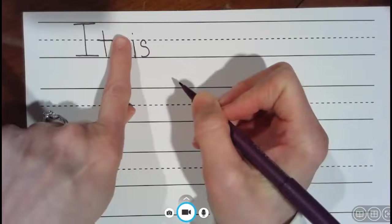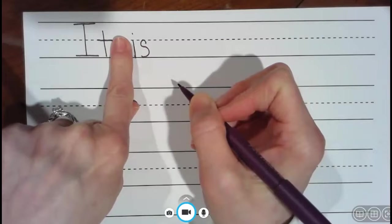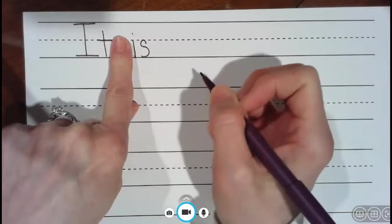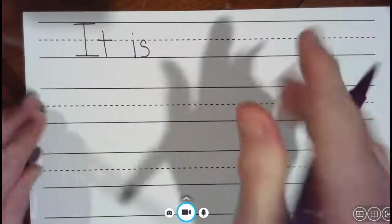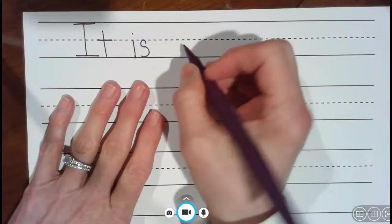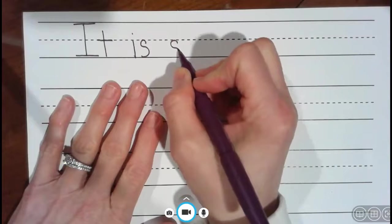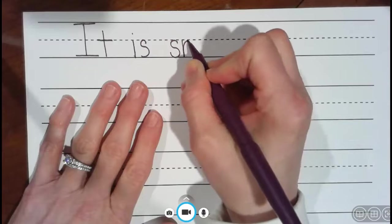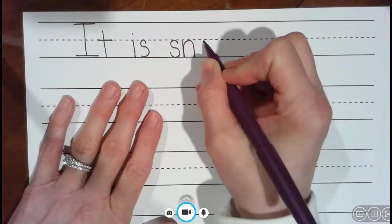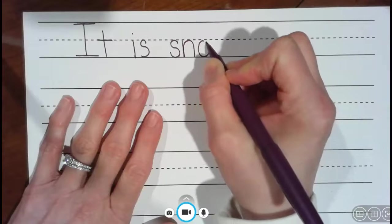Now one thing about writing a sentence, you want to make sure in between your words you use a finger space. In other words, you don't want your letters all squashed together and you don't want it too far apart, which we've talked about all year. All right, it is snowing.